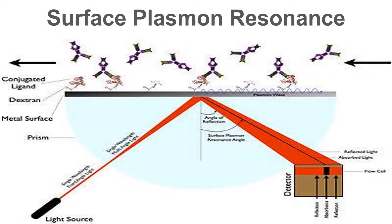Surface Plasmon Resonance or SPR is the resonant oscillation of conduction electrons at the interface between a negative and positive permittivity material, stimulated by incident light. The resonant condition is established when the frequency of incident photons matches the natural frequency of surface electrons, oscillating against the restoring force of positive nuclei.